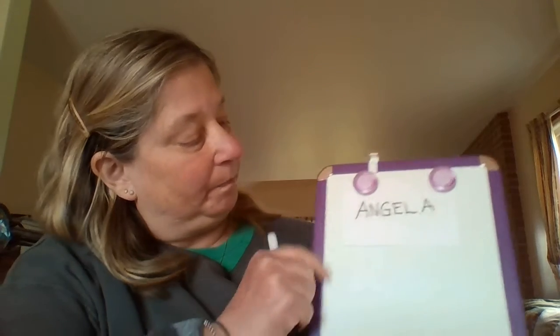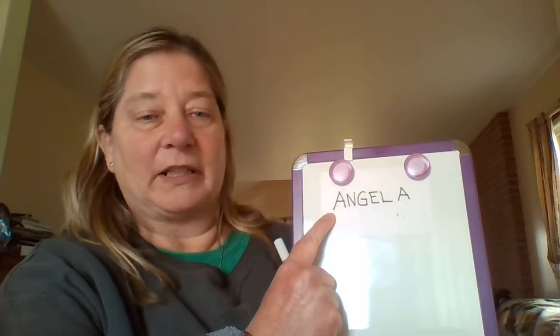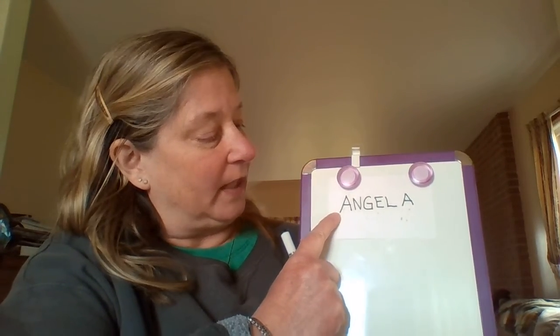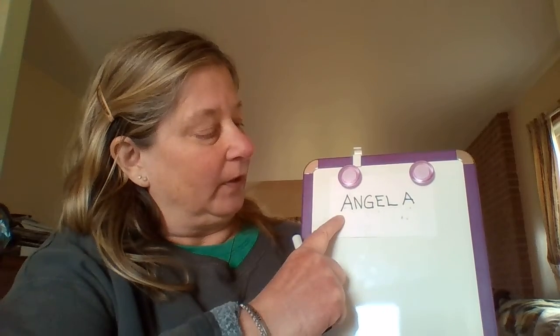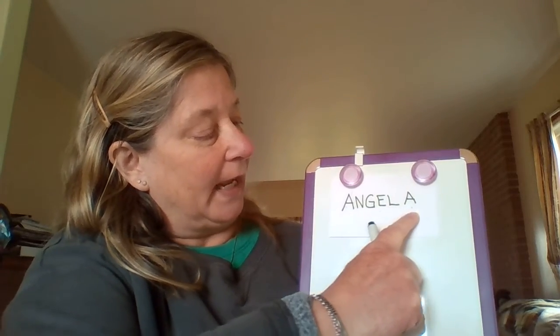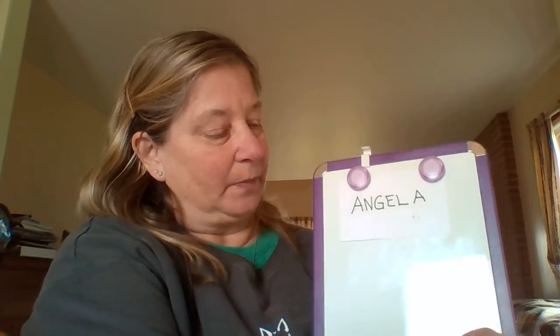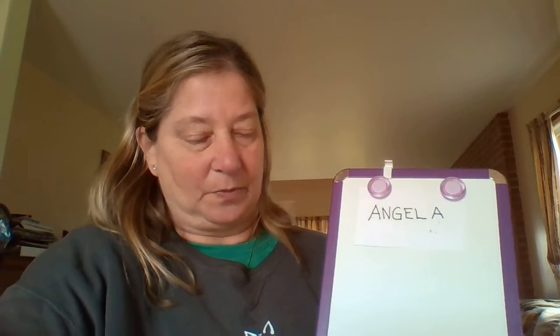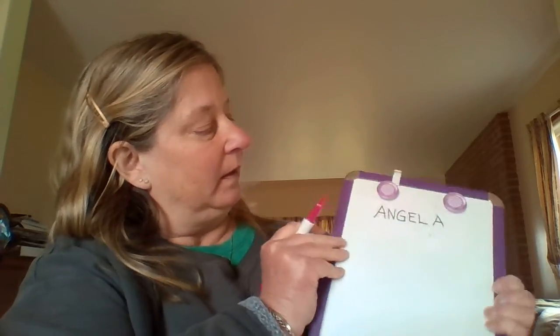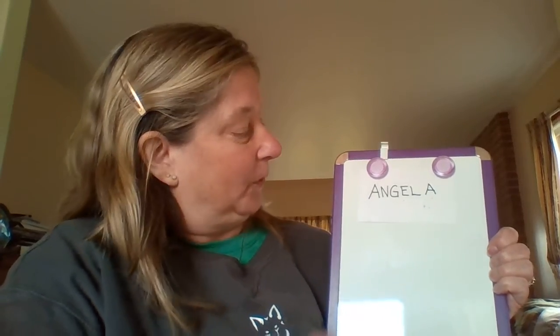Now let's look at our name. Remember, we always read left to right, so we start over here at the left. I take my pointer finger and I'm gonna go Angel A. Okay, so we're gonna look at our name and we're gonna write. I'm gonna take my favorite color pen — which is pink today — to write Angel's name. So what are we writing today? We're writing Angel's name, AJ. We're not gonna let AJ get away with just writing AJ — we're gonna write his whole name out.